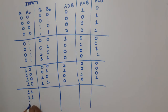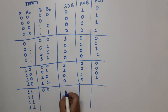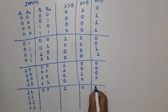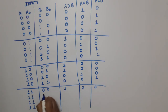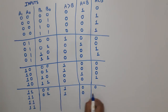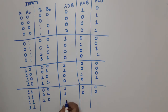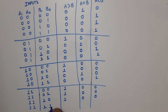Last case: A is 1,1 (value 3). Compared with B=00: A is greater, output 1,0,0. With B=01, A=3 and B=1, A is greater: 1,0,0. With B=10, A=3 and B=2, A is greater: 1,0,0. With B=11, both A and B are equal: 0,1,0.